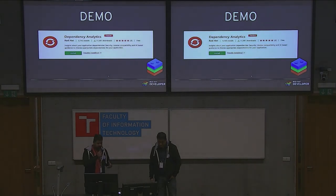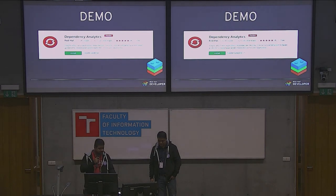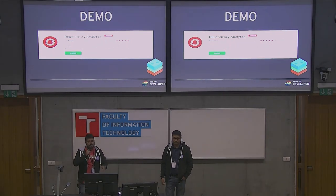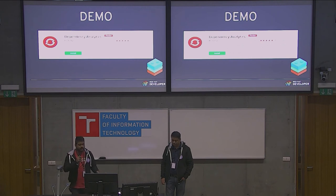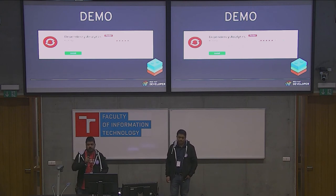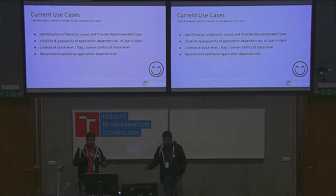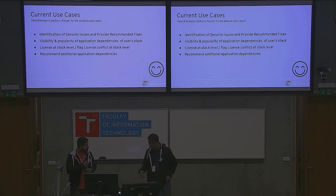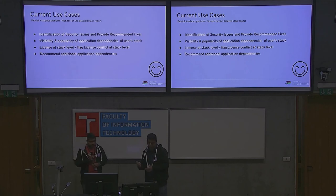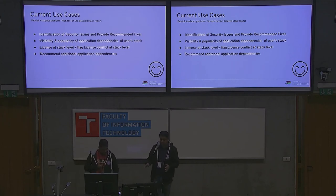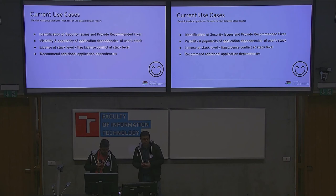We launched this extension about three months back and this is the first time we're talking about it at any conference. The number of installs and downloads is very good — we have around 11,000 downloads and 5,000 unique installs so far. We request you to give it a try and provide your feedback. The current use cases — whatever you saw in the stack report — cover security vulnerabilities with recommended fixes, popularity and maintainability, licenses, and AI-based insights about dependencies you can add to your application.